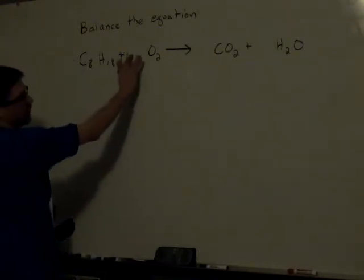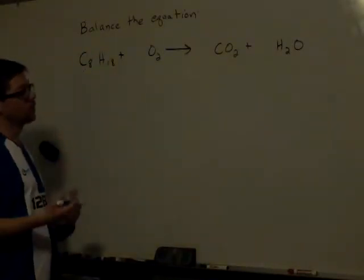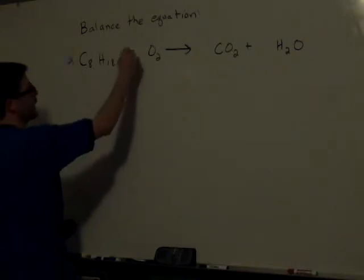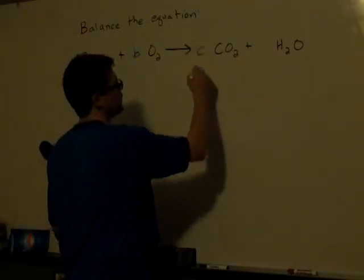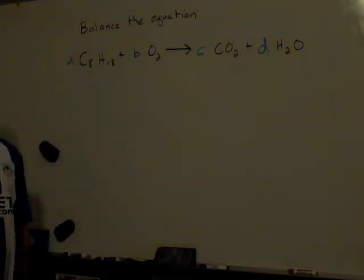I know that I have to have a coefficient number in front of each of these terms in order to get the equation to balance. What I'm going to do is just assume these numbers are, we'll call this one A, call this one B, call this one C, and call this one D. And we'll figure out what those numbers are.